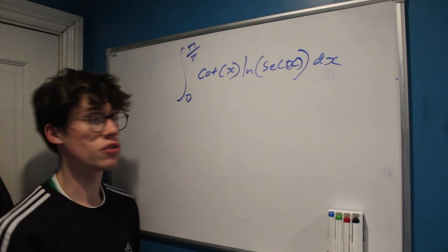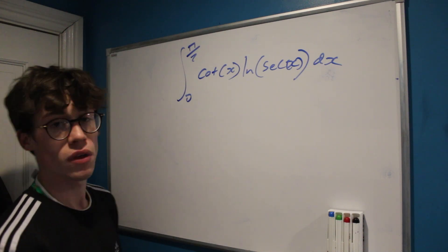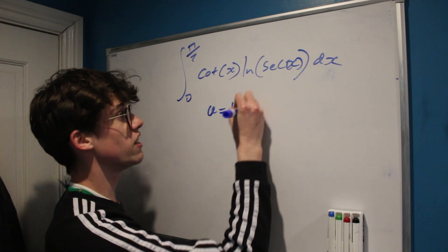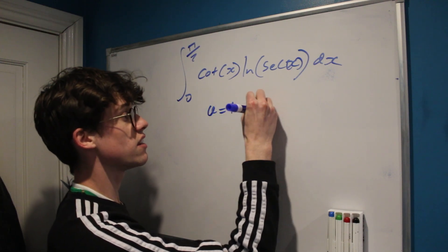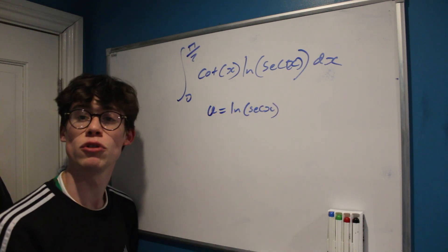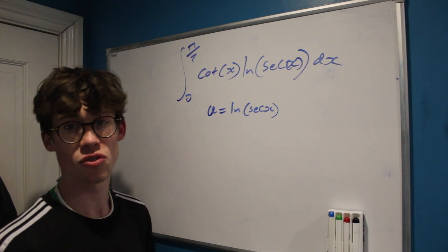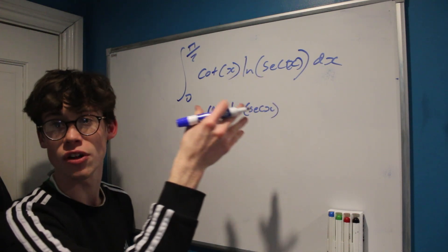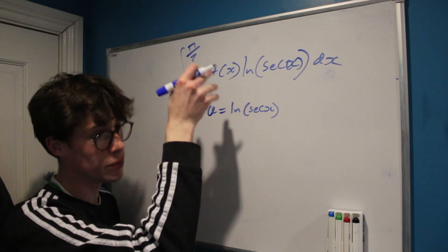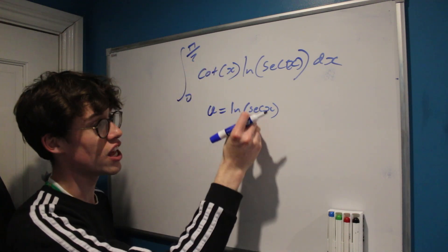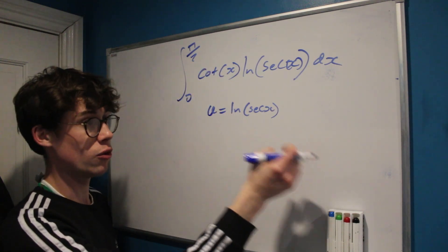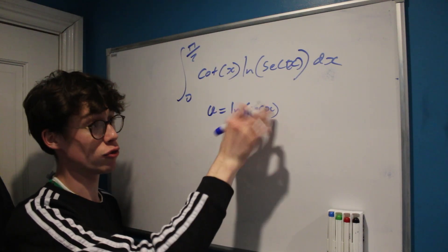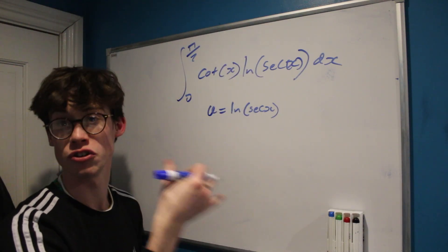My first thought when I saw this integral was to make a u-substitution for ln(sec x), because differentiating the natural log of trig functions tends to give quite interesting results. We use the chain rule: differentiating what's inside the natural log gives another trig function, and differentiating the natural log itself gives the reciprocal of the trig function within.